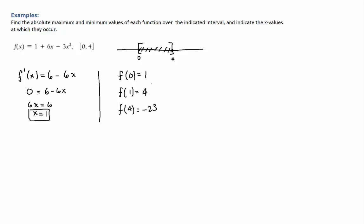So what do we have? Well the largest number of these three numbers is going to be this one right here. So you have an absolute max for the function, absolute max at x equals 1 and the absolute max is 4. And you have an absolute min at x equals 4.